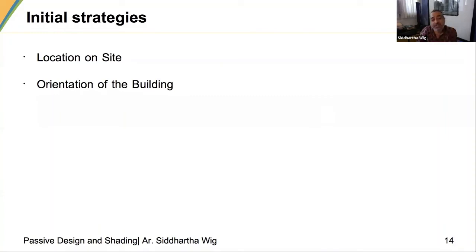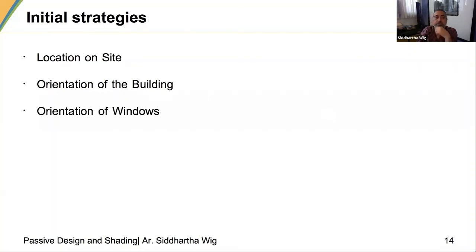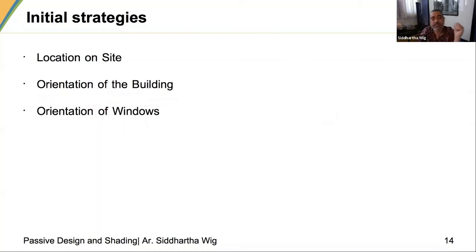Orientation of the building is very important — it affects shadows, heat gain, heat loss and ventilation. Often more important than the orientation of the building is the orientation of the windows, as the openings are what actually allow solar ingress, heat or ventilation. The orientation of the windows can differ from the orientation of the building, as we will see in some case studies.